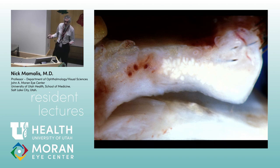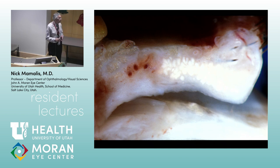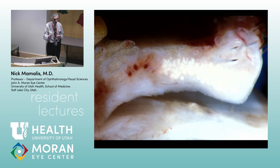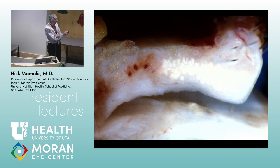Many structures in ophthalmology have layers, and you really have to memorize what those layers are. This is an eyelid seen in cross-section — full thickness eyelid. The first layer on the surface is skin. Second layer is muscle. Third is tarsus.